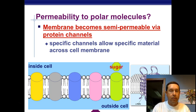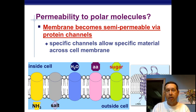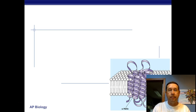Sugar, amino acids, water, salts, other ions, and other substances each use a different protein to get across the cell membrane. These transport proteins are specific.